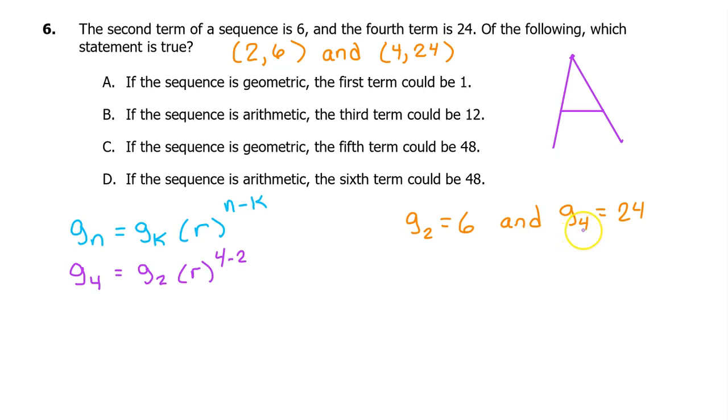Putting the higher index term in the front, we have G_4 equals G_2 times r to the (4 minus 2) power. We have 24 equals 6 times r to the second power. Dividing both sides by 6, we get 4 equals r squared. Taking the square root of both sides gives us r equals 2. This gives us the geometric model G_n equals G_2 times 2 to the (n minus 2) power. But of course, G_2 equals 6, so I'm just going to make that change.